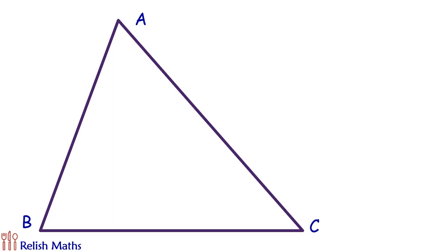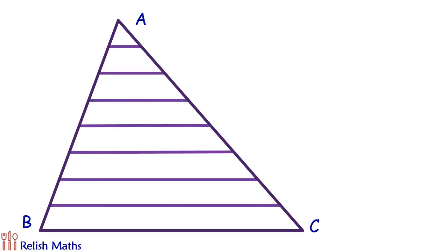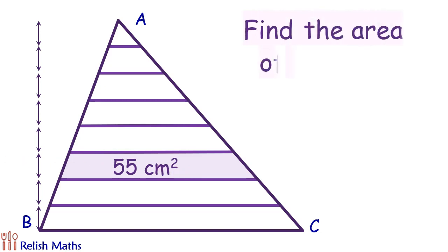In today's question, given is triangle ABC which is divided into 8 parts by 7 parallel lines which are equidistant from each other, and the area of the 6th part is given as 55 cm². Using this data, we have to find the area of triangle ABC.